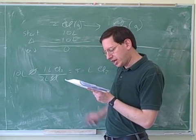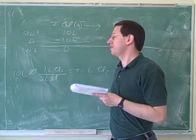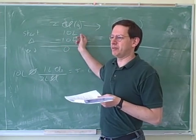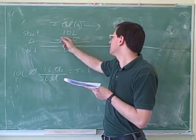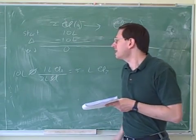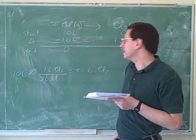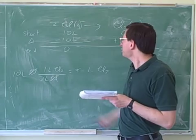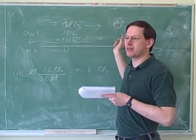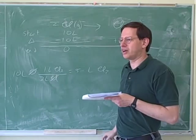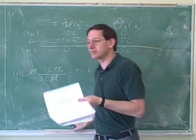How do I know to use a start-change-end table here? Well, for one thing, if you're having trouble, try to use a start-change-end table and maybe it'll help you. They gave me the starting amount here and the start-change-end table helps us. The key mistake people make is they just copy the numbers without thinking. Just because this is 10 doesn't mean this is 10. You have to use the stoichiometric coefficients to figure out what the changes are — the stoichiometric coefficients give us the changes.